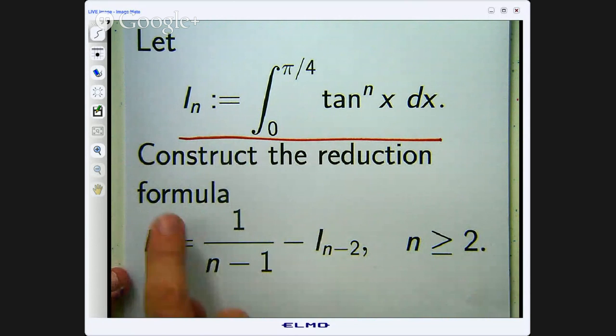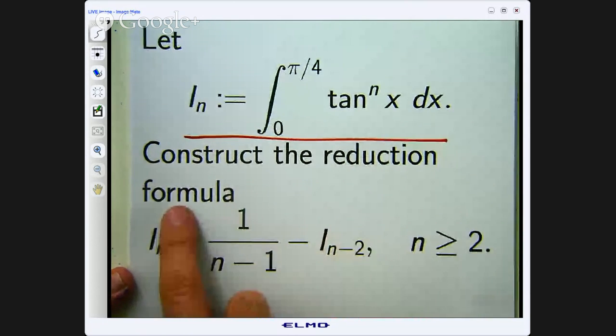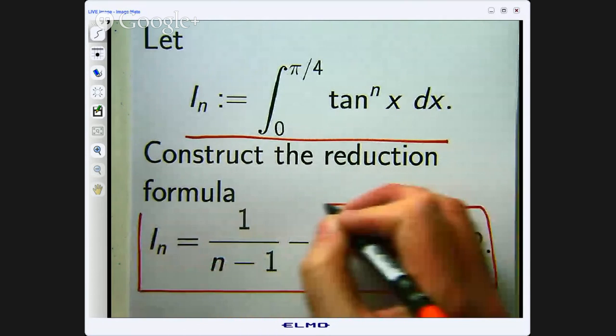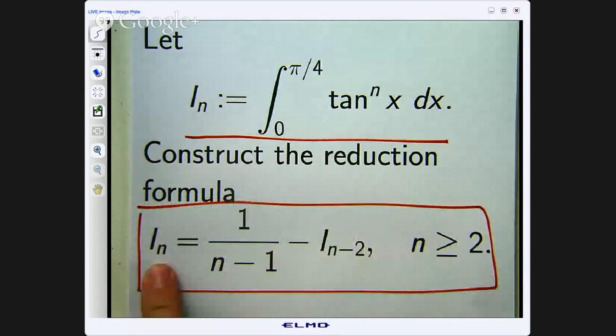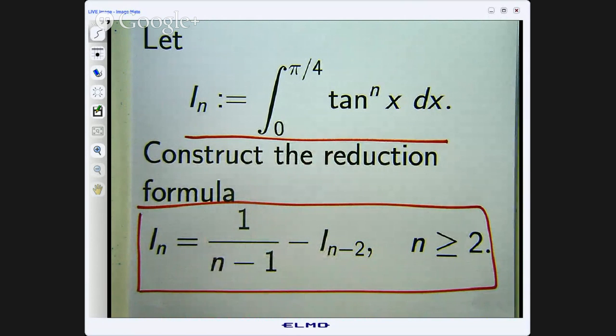We are asked to construct or derive the following reduction formula. Basically it says that you can compute I sub n through this procedure that relies on I sub n minus 2 and this value here.